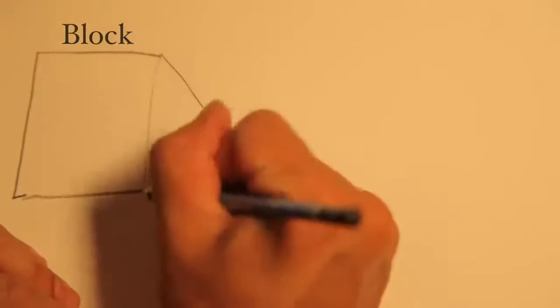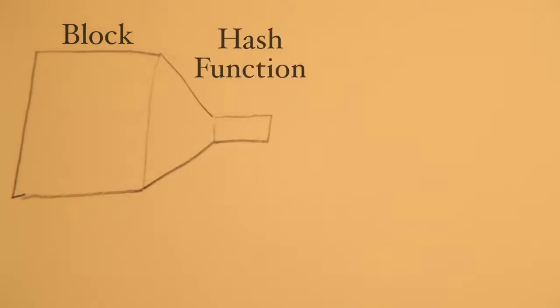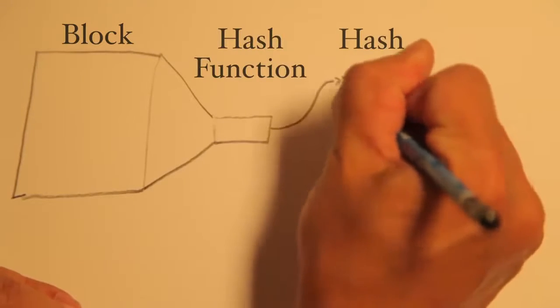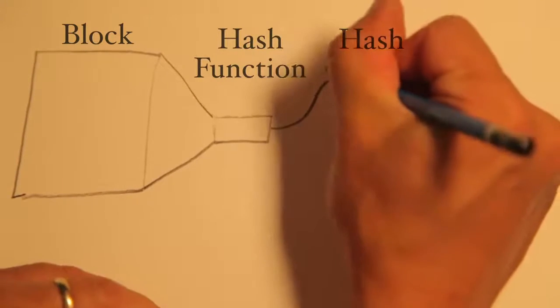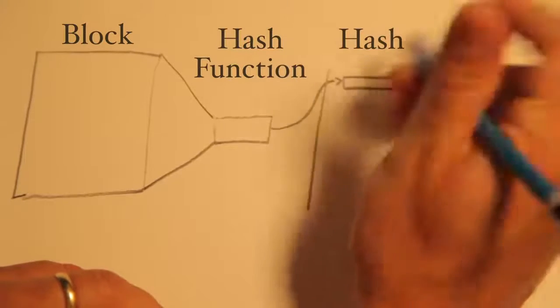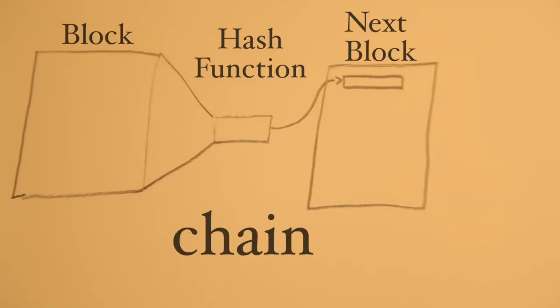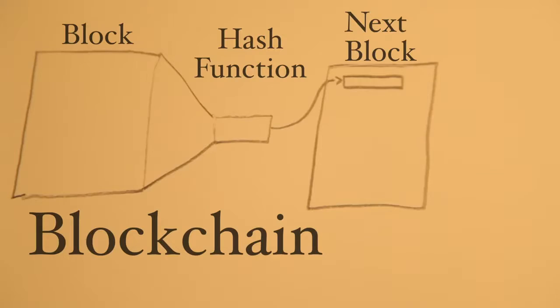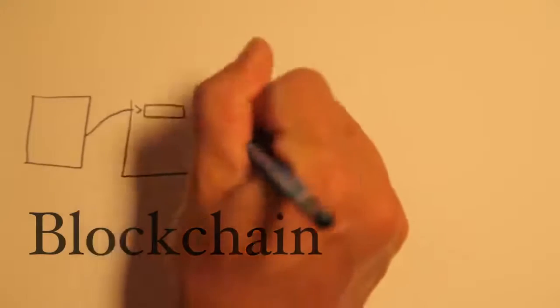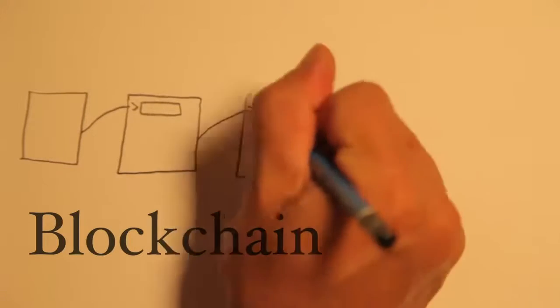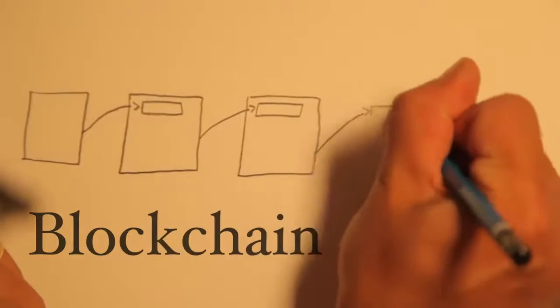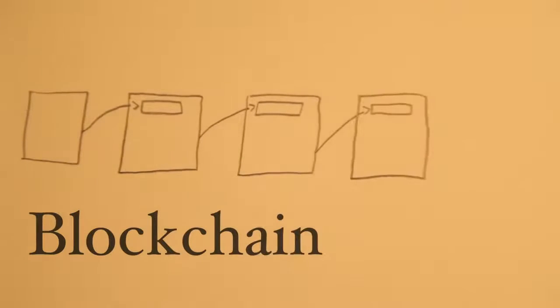But instead of simply downloading the block, it actually attaches to the block by calculating the hash of that block and including it within the next block of new transactions they are working to mine. This is how a chain is created between blocks, which we call a blockchain. It creates an information dependency between all blocks. If you change one symbol in any block within a blockchain, that change will propagate forward to the very front. So it locks the history of all transactions in place.